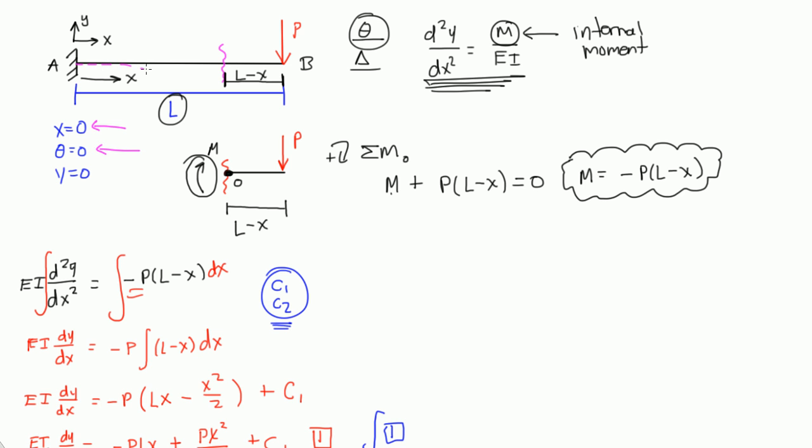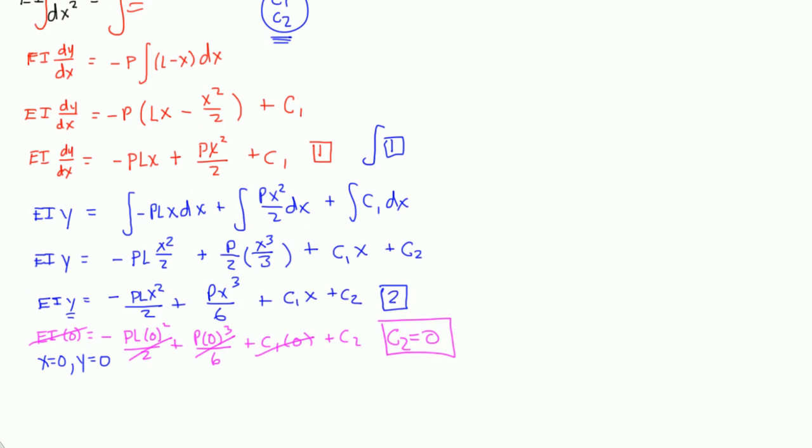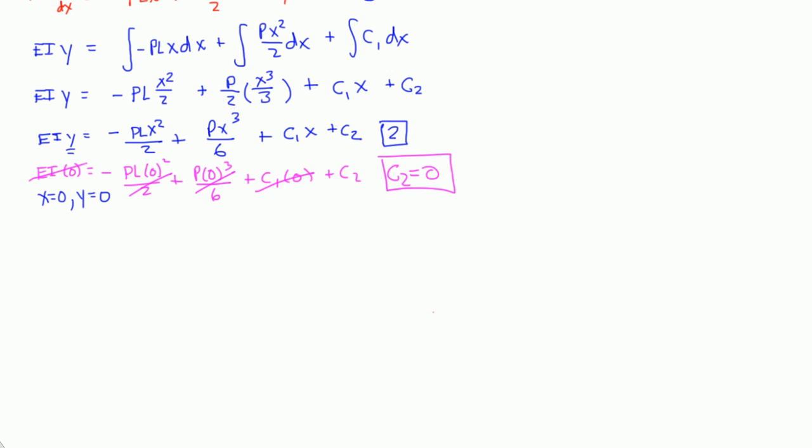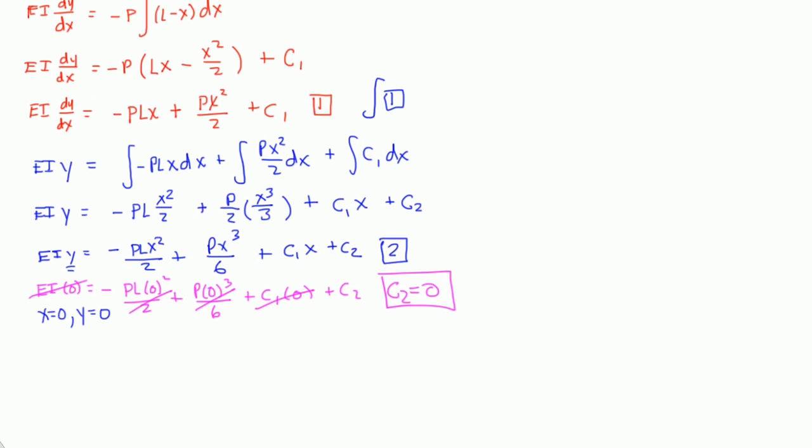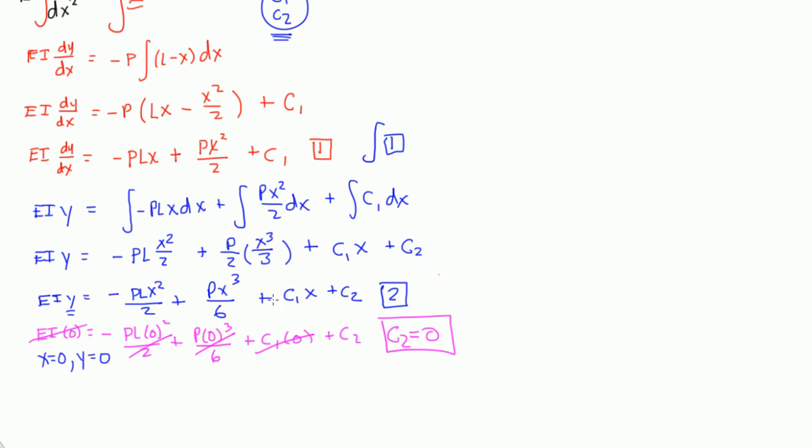So, you'd have this and then it'd come down, right? And this here is a 90 degree angle, the elastic curve or the deflected shape and this fixed end. So, at point A, the slope is equal to 0. At x equals 0, the slope is equal to 0. We can actually use this boundary condition and plug it into equation 1. So, let's do that.